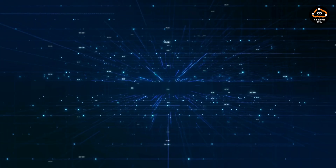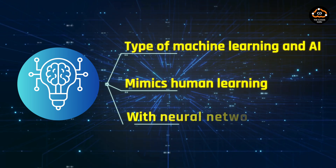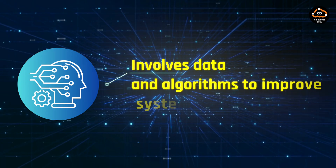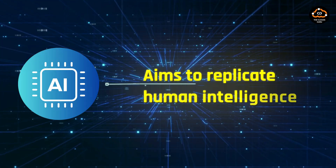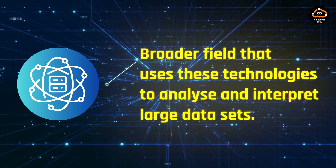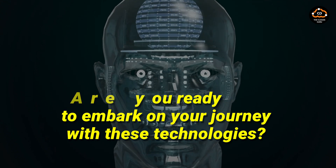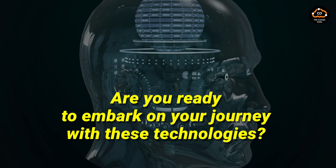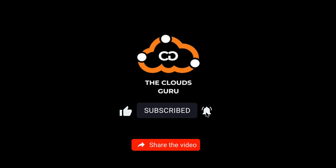In summary, deep learning is a type of machine learning and AI that mimics human learning, with neural networks at its core. Machine learning involves data and algorithms to improve system accuracy, and AI aims to replicate human intelligence. Data science is the broader field that uses these technologies to analyze and interpret large data sets. Are you ready to embark on your journey with these technologies? Thanks for watching — don't forget to like, subscribe, and hit the notification bell for more insights into cloud computing. See you in the next one!